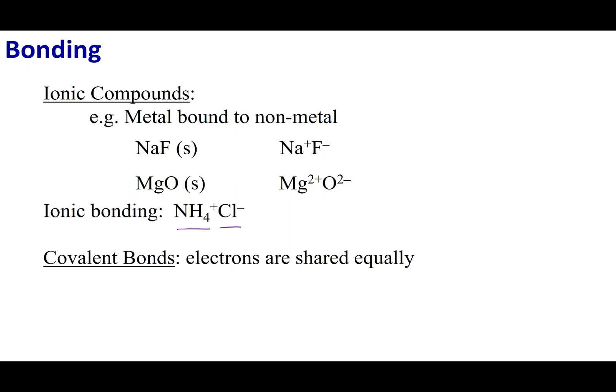A covalent bond means that two elements are sharing electrons together. Here are examples of things that are forming covalent bonds: hydrogen with hydrogen, chlorine with chlorine, and oxygen with oxygen. Let's go ahead and explore how this interaction works.